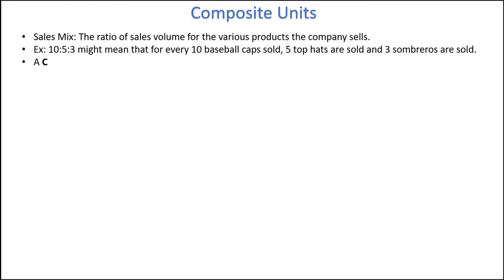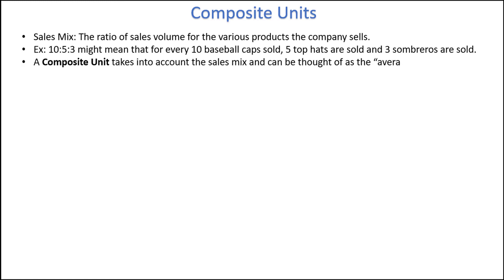A composite unit takes into account the sales mix and can be thought of as the average bag of goods sold. It is the composite unit of 10 baseball caps, 5 top hats, and 3 sombreros to which we will apply our cost-volume-profit analysis, instead of to individual products as we have done previously.